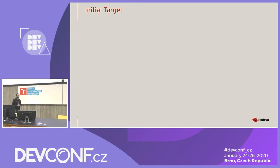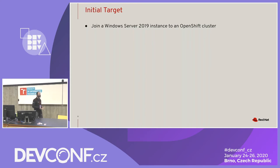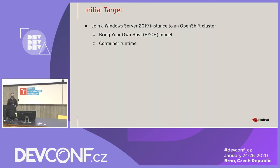Our initial target was to start very simple — just the basics, just enough to get our feet wet. The first thing is: you take a Windows Server instance running somewhere and add it to your OpenShift cluster. This is what we call the bring-your-own-host model, which means the customer creates the Windows VM, installs the container runtime, attaches it to the cluster VPC or network, and then we add it to the cluster.